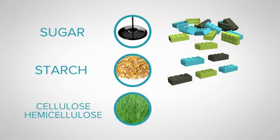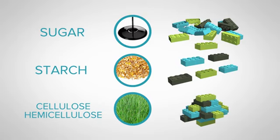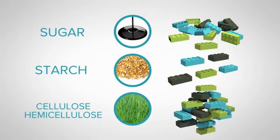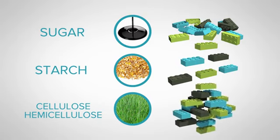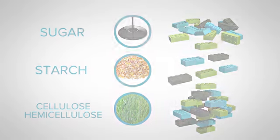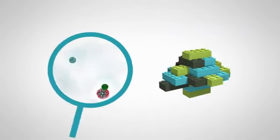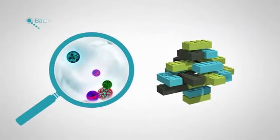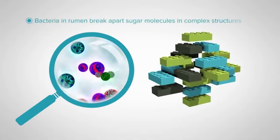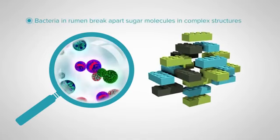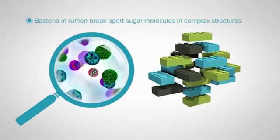Finally, the structural carbohydrates, such as cellulose and hemicellulose, that are found in good quality pasture, are like having a more complex structure made from Lego that takes different mechanisms to pull apart before they can be used. Luckily, the bugs in the rumen are capable of breaking apart these complex structures, so the sugar molecules — the Lego blocks — can be used by the bugs for energy.